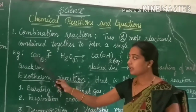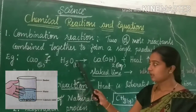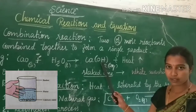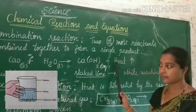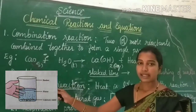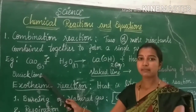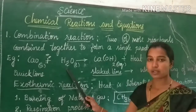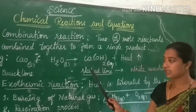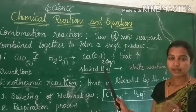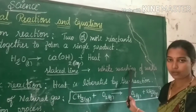For example, calcium oxide vigorously reacts with water, which produces calcium hydroxide and releases heat energy. Calcium oxide is called quicklime. Quicklime vigorously reacts with water to produce calcium hydroxide, which is called slaked lime.